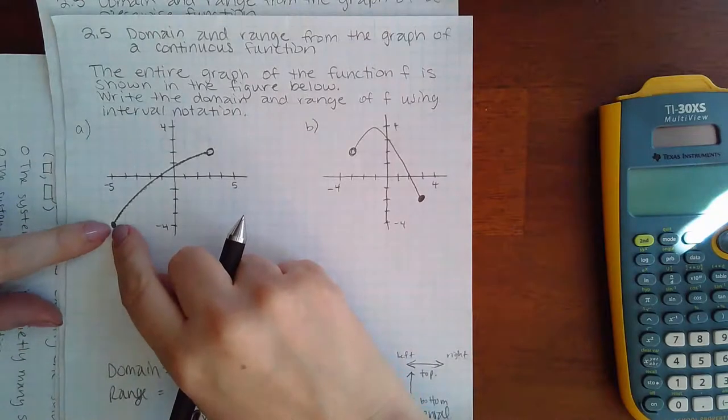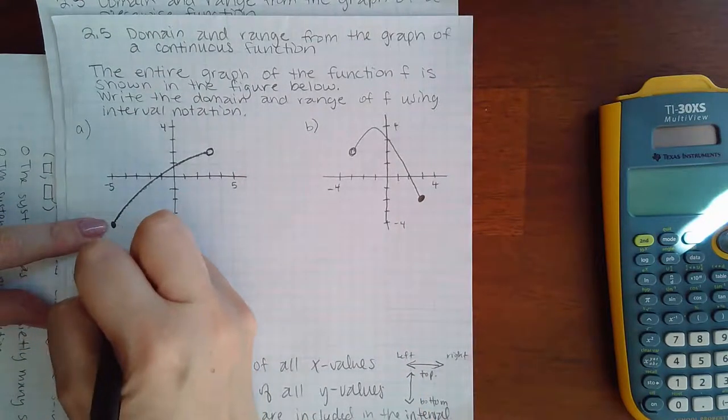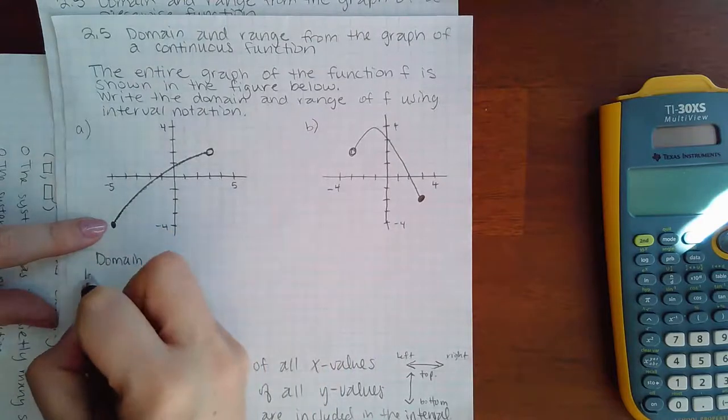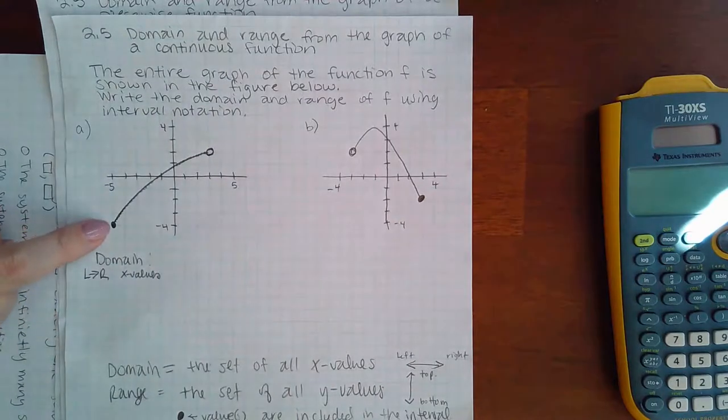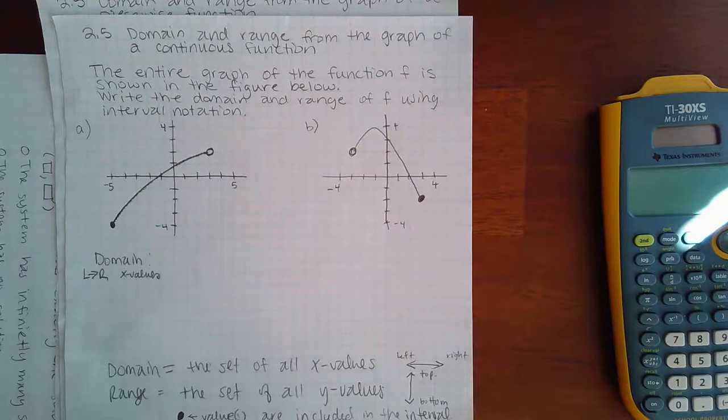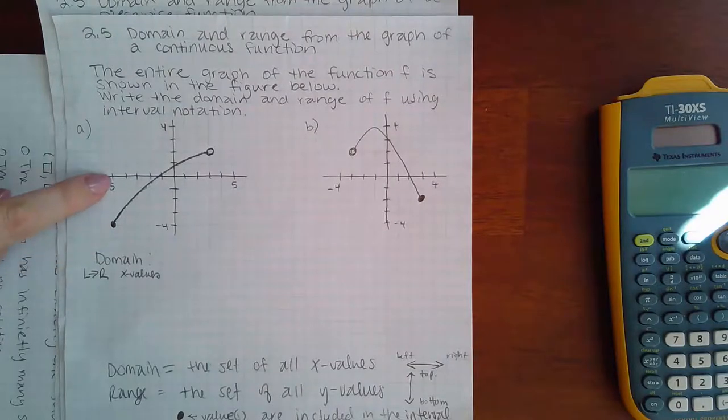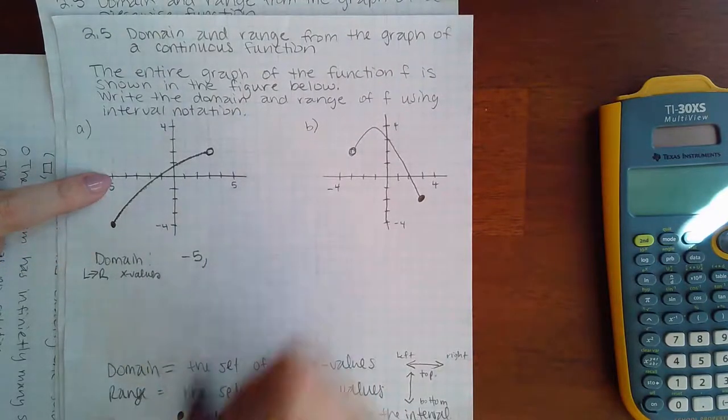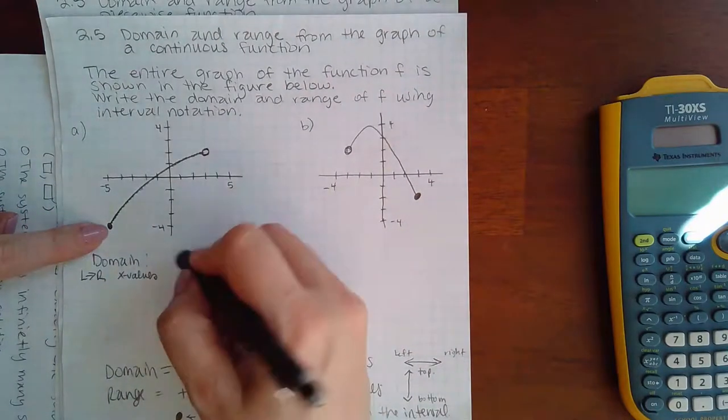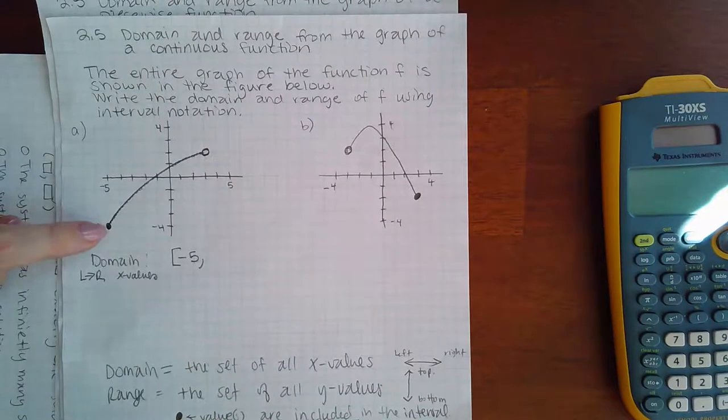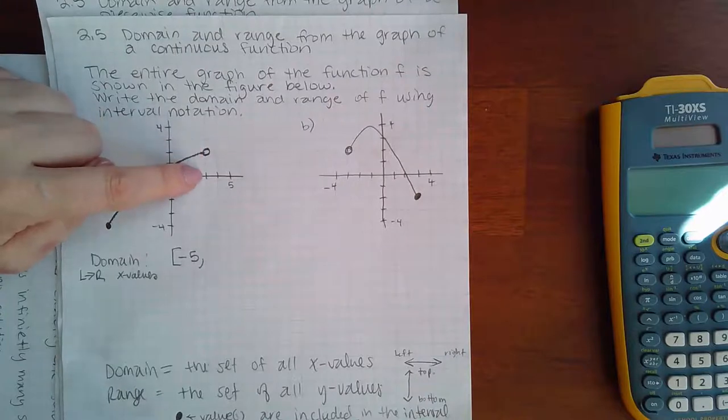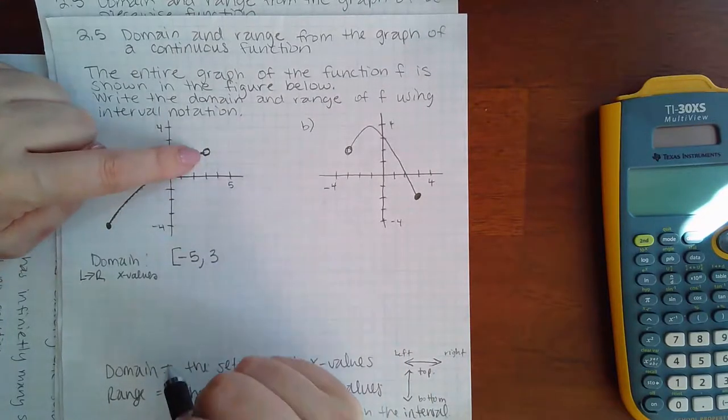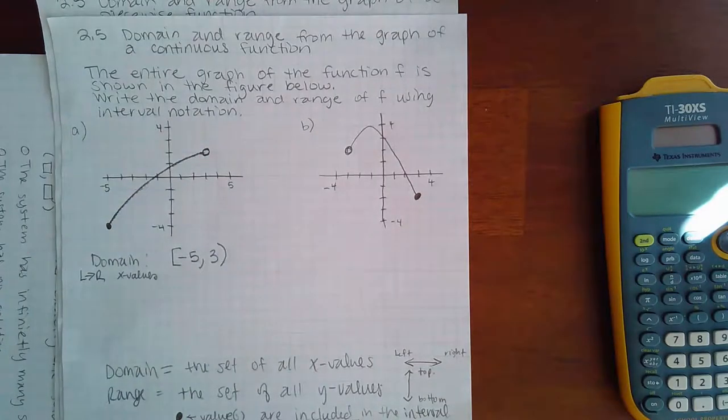So here, I noticed that for domain, I'm going from left to right and I'm looking at x values. That's important. You need to remember that. So when I do that, this is where it starts on the left. I need the corresponding x value, which is negative 5, and it has a solid dot, which means I'm going to use a bracket. Now, the graph continues all the way until it gets to here on the right side, and this corresponds to the x value of 3, but it is an open dot, so I use a parenthesis.